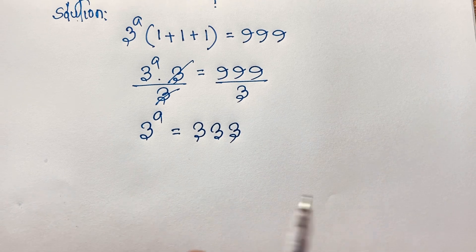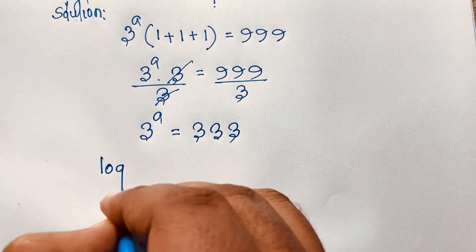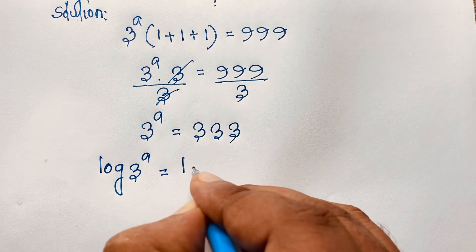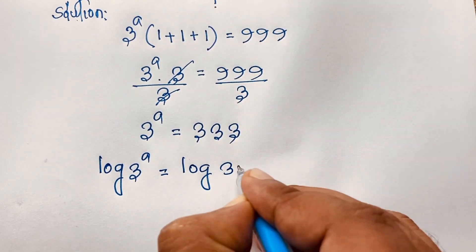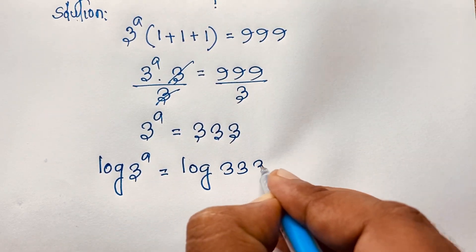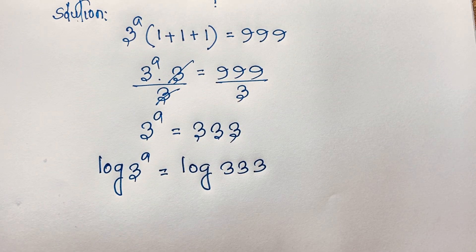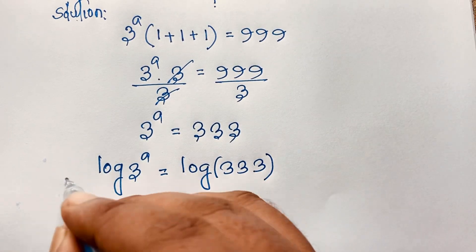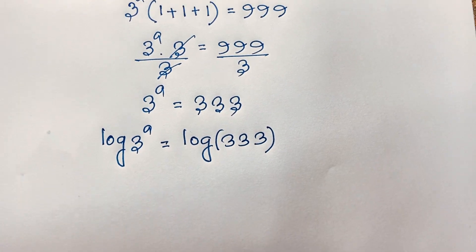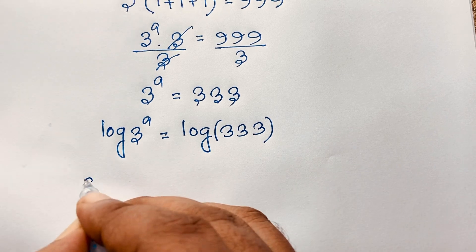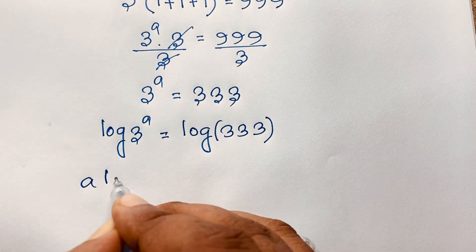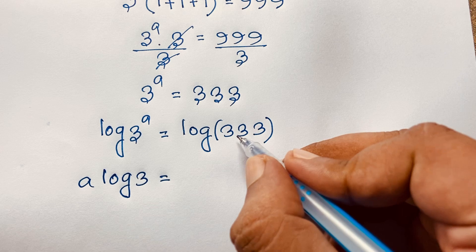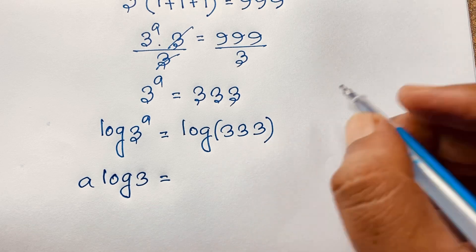Now I apply natural log to both sides. So log of 3 to the power a is equal to log of 333. According to the natural log formula, the exponent moves to the front, so it will be a times log 3 is equal to log 333.